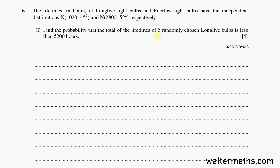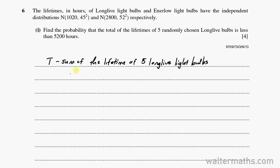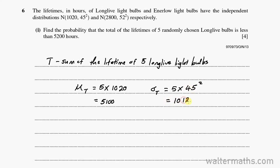This is a case of 5 independent observations from one normal distribution. If T is the sum of the lifetimes of 5 long-lived light bulbs, the mean of T will be 5 times the mean of the normal distribution, which is 1,020, giving us 5,100. And the variance of T will be 5 times the variance, which is 45 squared, giving us 10,125. So T follows a normal distribution of mean 5,100 and variance 10,125.